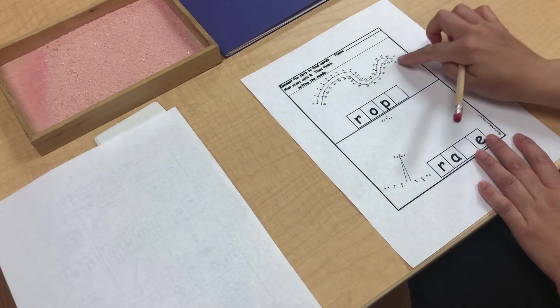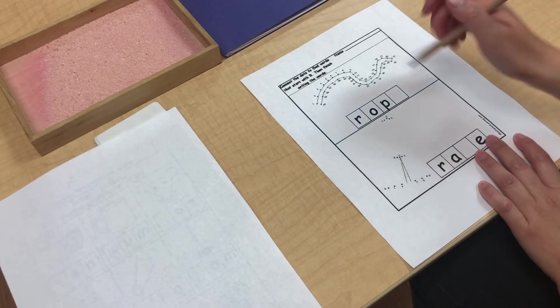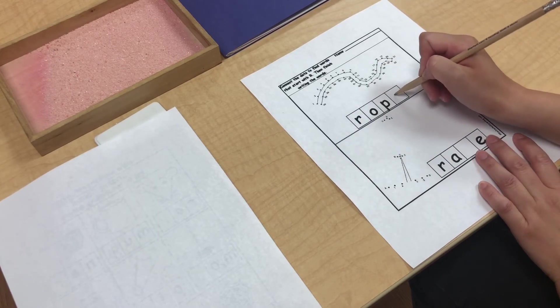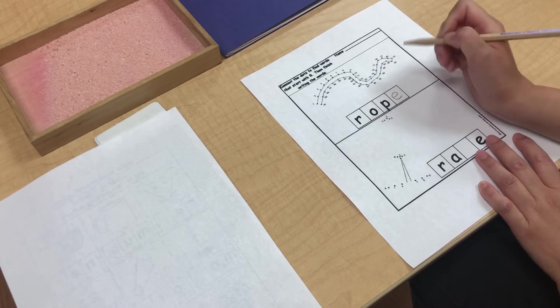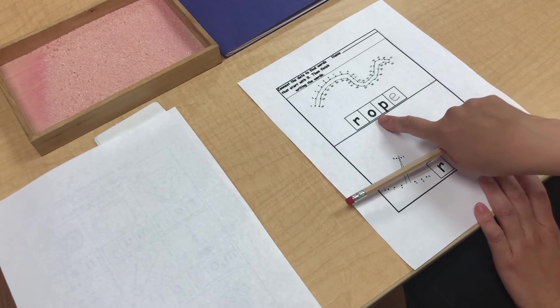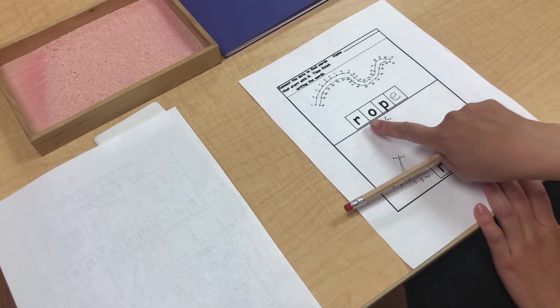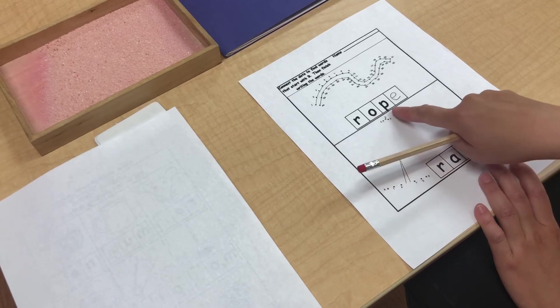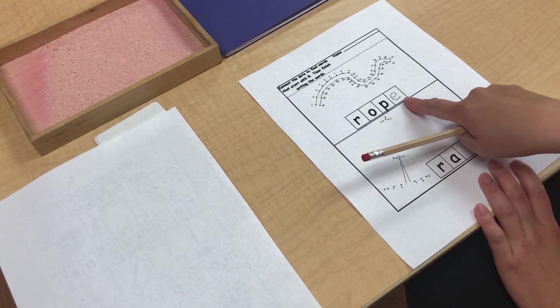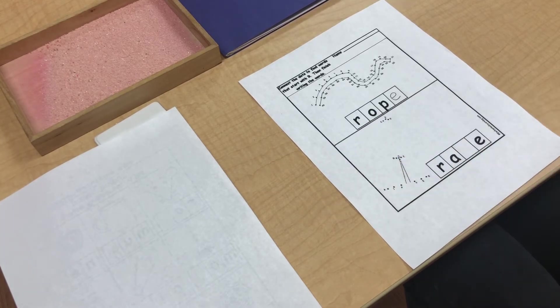This is a rope. We are missing letter E. And remember, letter E at the end doesn't make sound. And letter O will make the long vowel sound. O. Let's read it. R, O, P. No sound for letter E. R, O, P. Rope. Great.